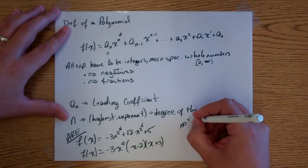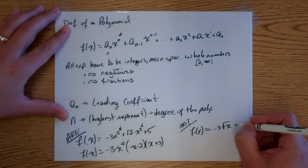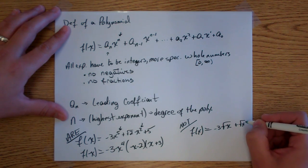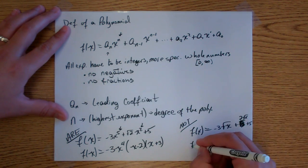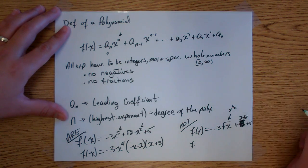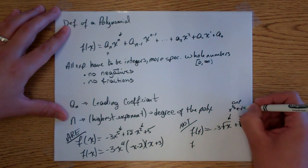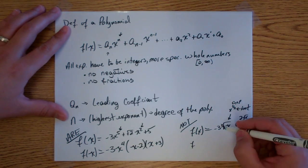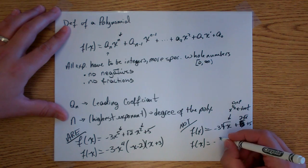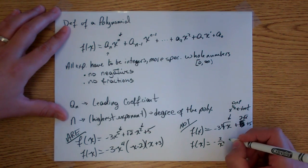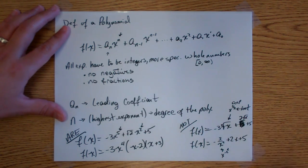Now, these are not polynomials. f of x equals negative 3 square root of x plus 2 square root of x plus 5, because the square root gives us x to the one-half — that's a fractional exponent, so no go. And something like negative 3 over x squared plus 2x plus 5 is not a polynomial either, because that's going to be x to the negative 2, and the exponent can't be negative.